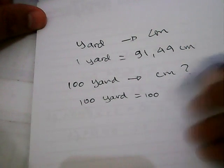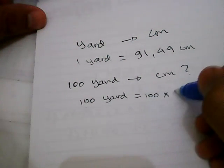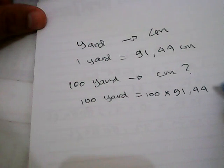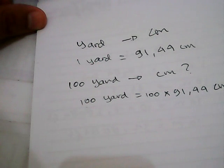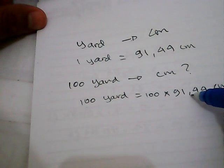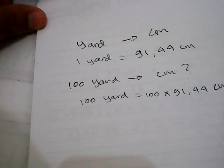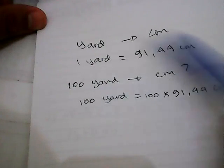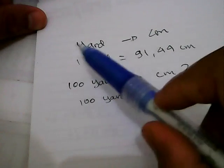You need to multiply it with this number, 91.44 centimeters. Why do we have to multiply this 100 with this number? It's because we want to convert yards into centimeters. In this case, one yard is equal to one multiplied with this number.